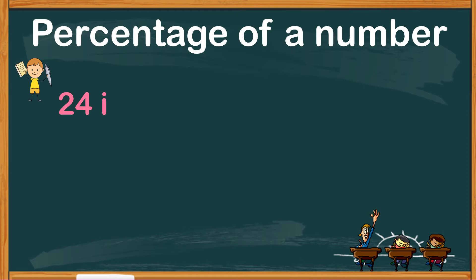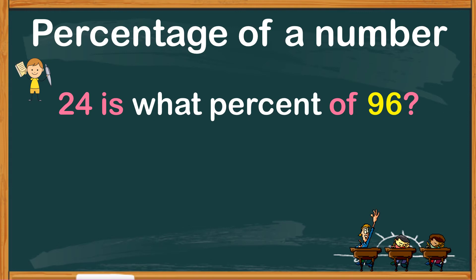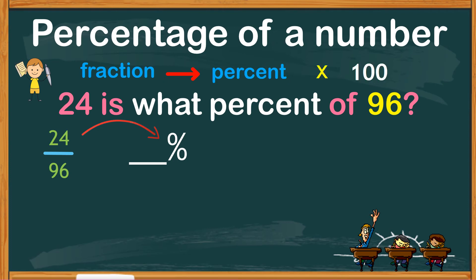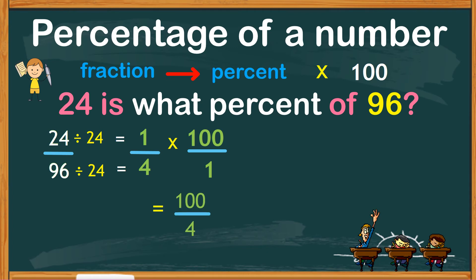Here is a similar question. 24 is what percent of 96? To clearly understand what the problem is asking for, let's rephrase the question. It says, 24 out of 96 is what percentage? Again, this is just changing fraction into percent by multiplying the fraction by 100. The given fraction 24 over 96 can still be reduced into its simplest form, so we get a much smaller number. By dividing the fraction by 24, we get an equivalent fraction of 1 over 4 times 100. Since 100 is a whole number, expressing it into a fraction comes with denominator 1. We now have 100 over 4, or 100 divided by 4, which is 25. So, 24 over 96 is 25%.